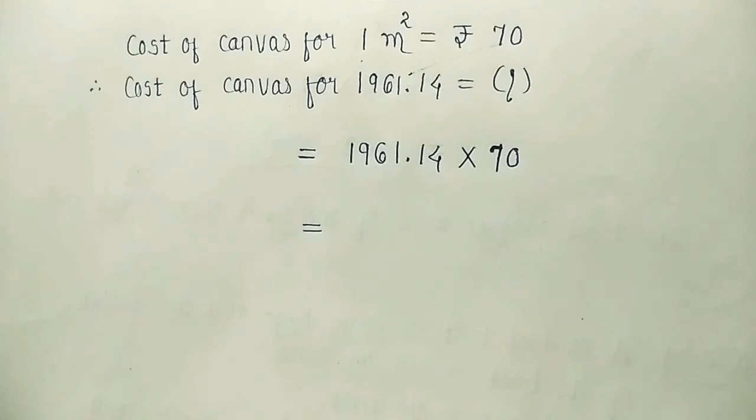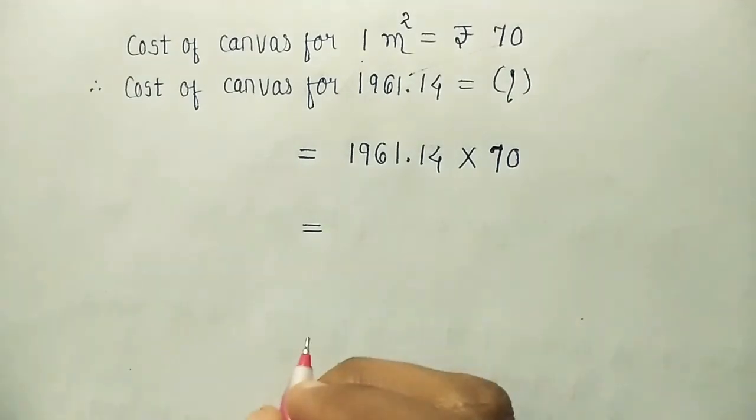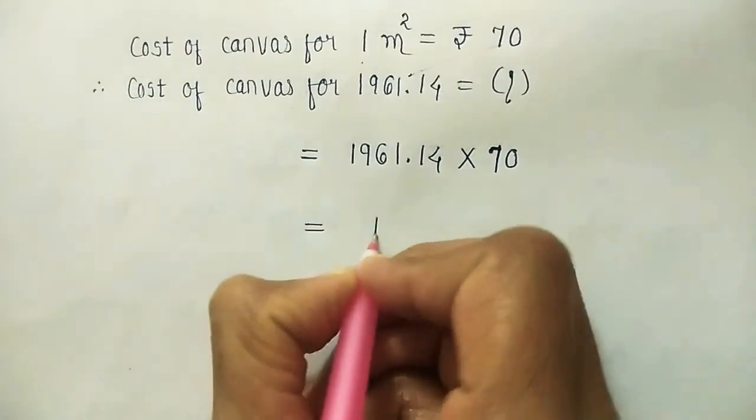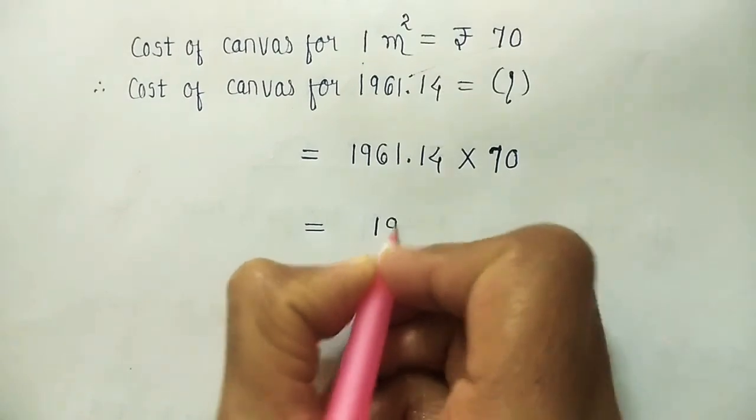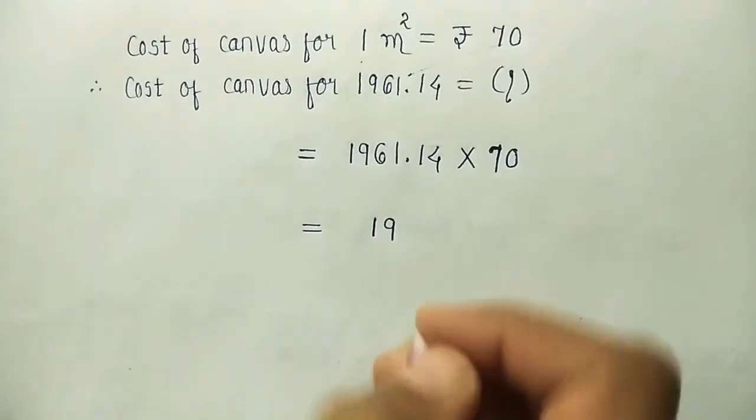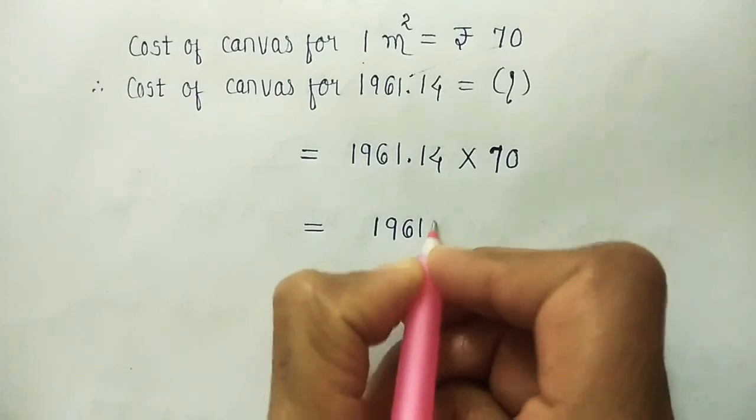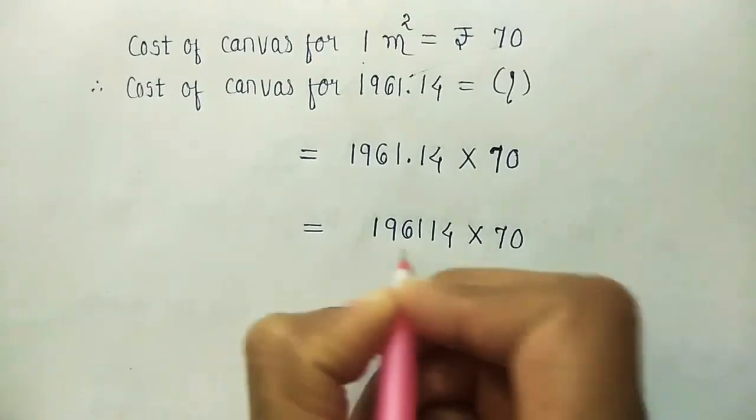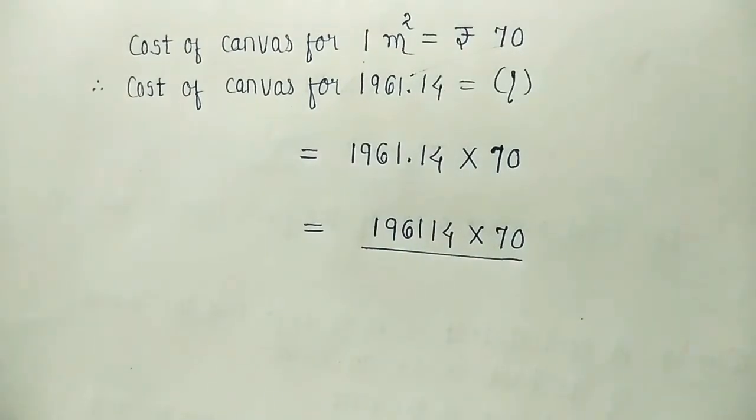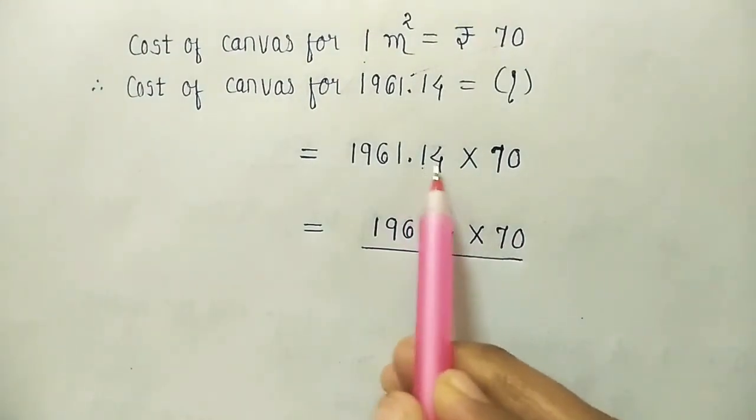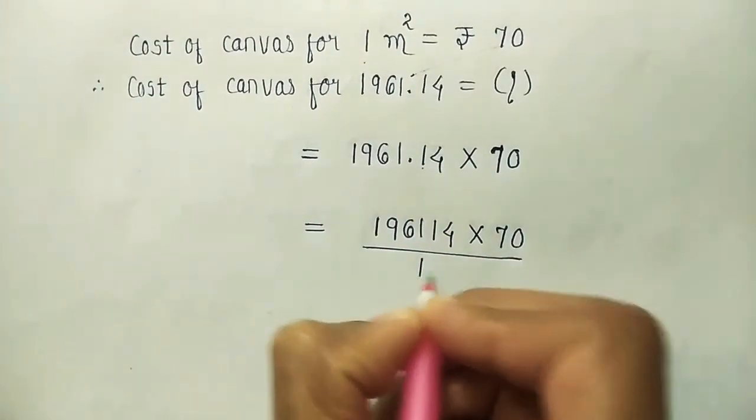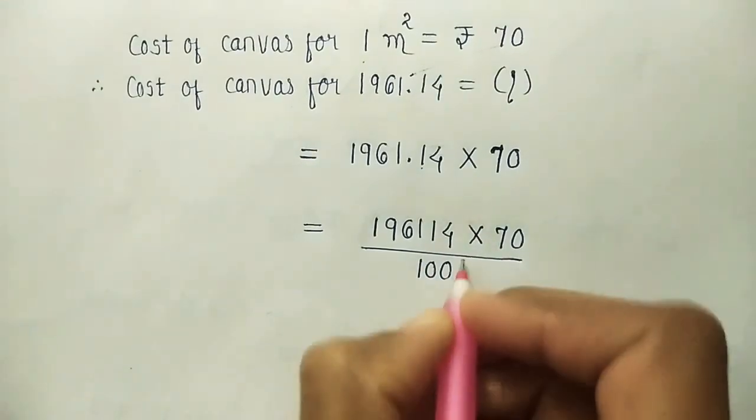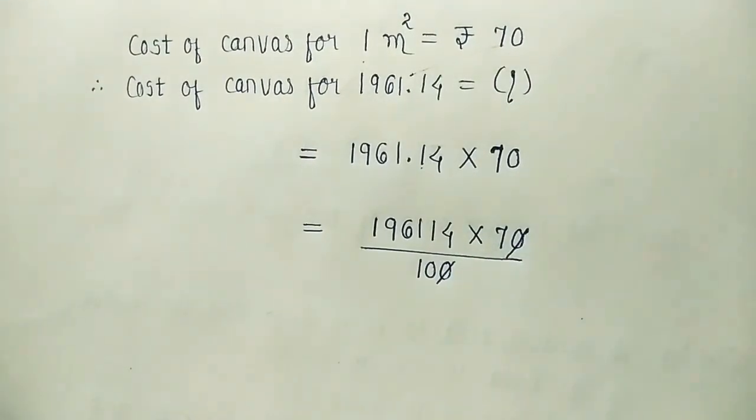Multiplication of this. Multiplication of this will give you answer. Before that let us put it. This decimal point will remove. So 196114 into 70 in denominator. After 2 digits we have kept decimal. So in the denominator we will have 100. This 0 and this 0 will go. We'll cut.